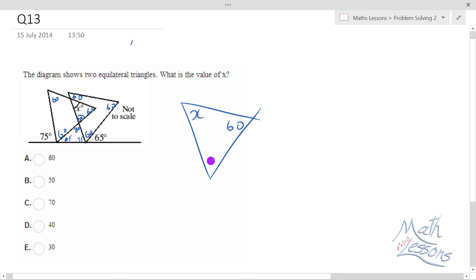x, 60, 80. So these add together to give me 140. 60 plus 80 is 140, so therefore x must be 40 degrees.